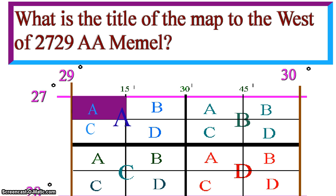In order to calculate the map title to the west of 2729 AA Memel, you would have to extend your lines of latitude and longitude as well as your grid.